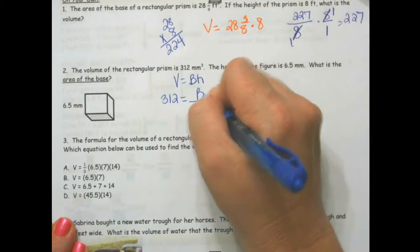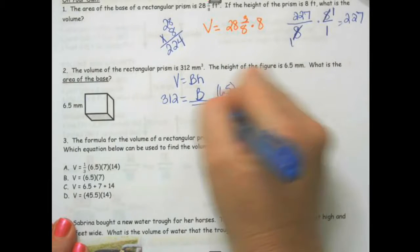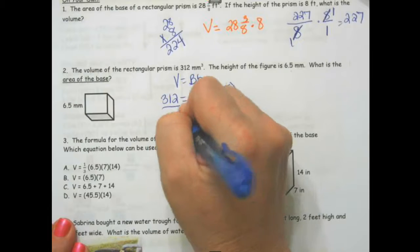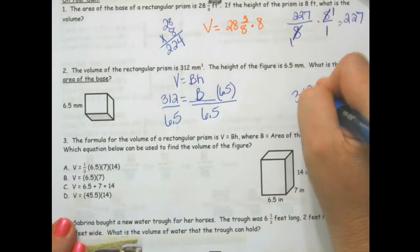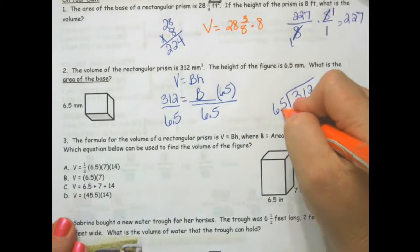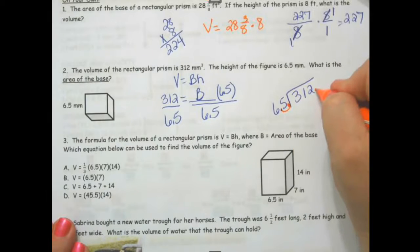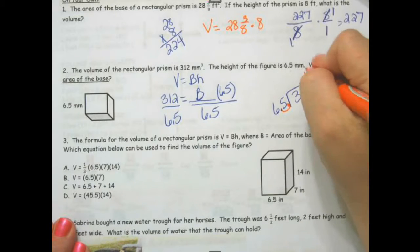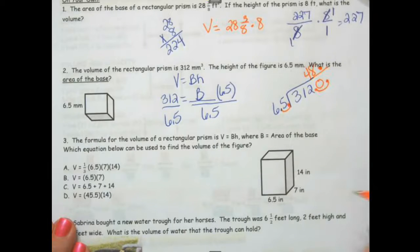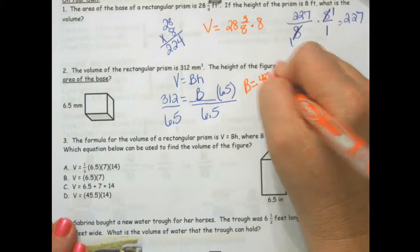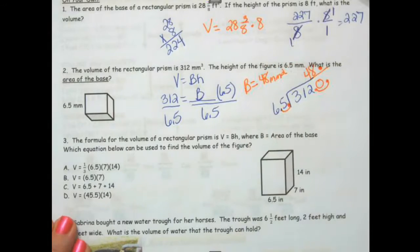So we are going to divide by 6.5. 312 divided by 6.5. Now, move your decimal over, move your decimal over, bring it straight up. This is going to be 48, so the big B is 48 millimeters squared because it is finding the area.